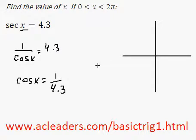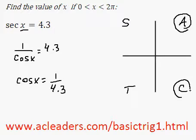Okay, so we know that all students take calculus, which can tell us which quadrants we're going to have our answers in. And cosine is positive, which tells us that our answers are going to be in the first and fourth quadrants.